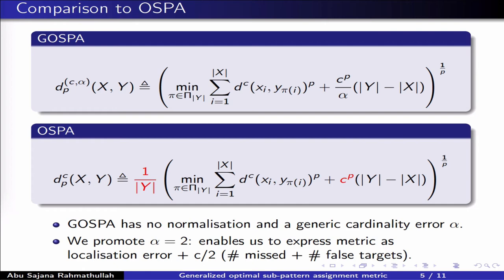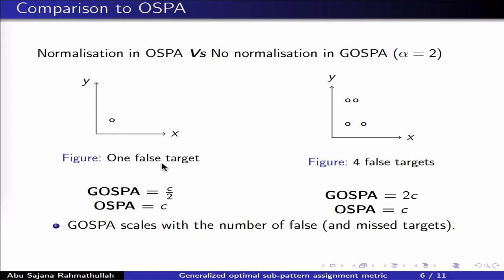Here is an example that illustrates what happens if you normalize the metric. There are no true targets in these two figures, but different numbers of false targets. According to traditional multi-target tracking literature, we would want the cost to be larger if we have more false targets. If there is one false target, GASPA with alpha equal to 2 is c over 2, whereas OSPA is c. If there are four false targets, GASPA is 4 times as large — that is 2c — whereas OSPA is still c. The reason OSPA still takes the value c, even though the cardinality error is 4 times as large, is the normalization factor. The normalization factor therefore prevents OSPA from scaling with the number of false targets, which goes against what traditional tracking literature tells us about performance measures.